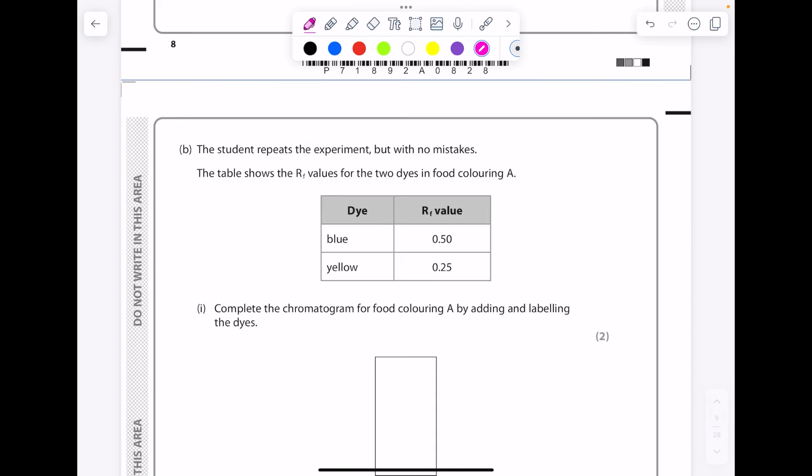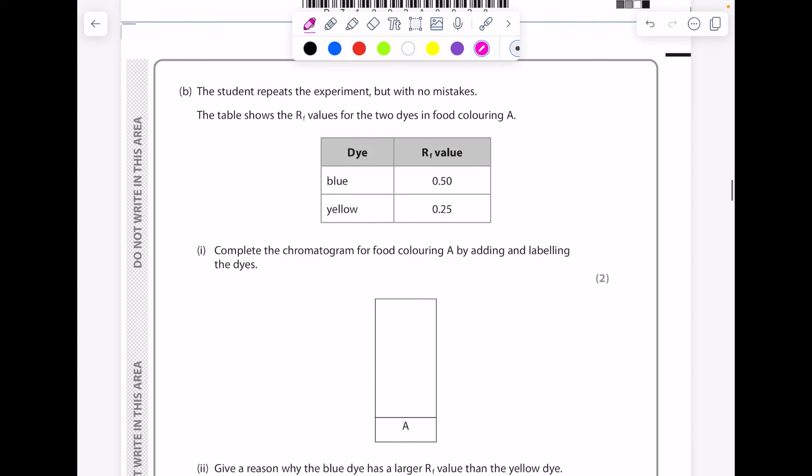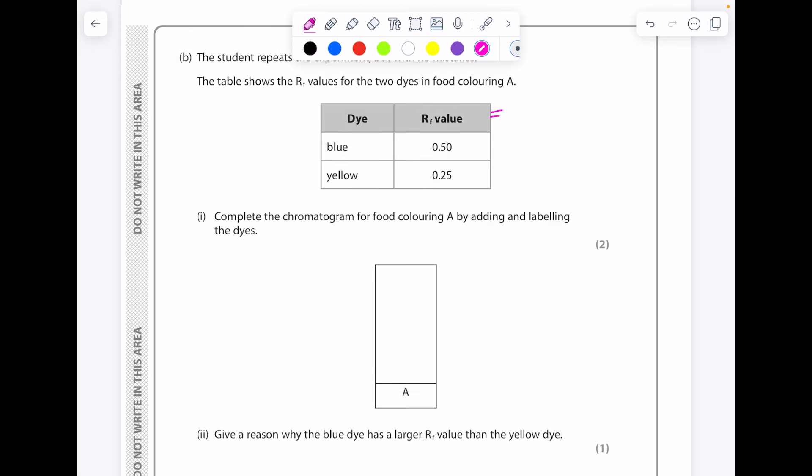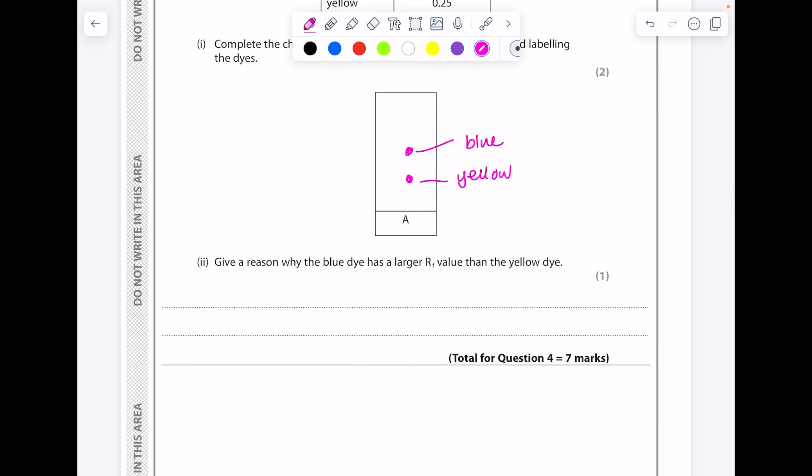The student repeats the experiment but with no mistakes. The table shows the RF values for the two dyes in Food Coloring A. Complete the chromatogram for Food Coloring A by adding and labeling the dyes. So the RF value, remember, is the distance moved by dye divided by distance moved by solvent, the water. So to be a higher RF value, clearly that means that blue must have moved further compared with yellow. Give a reason why the blue dye has a larger RF value than the yellow dye. The blue dye is more likely to be more soluble, so it travels furthest in the given time.